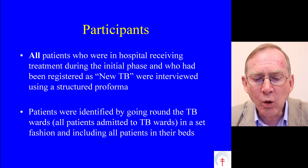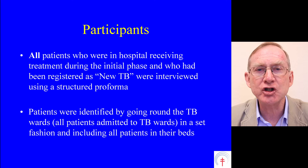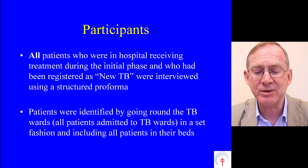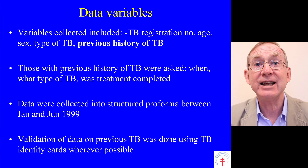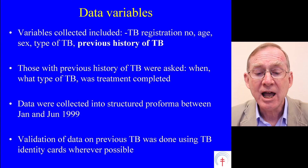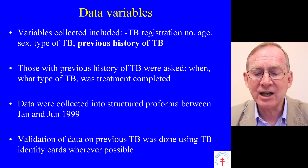Participants: 'All patients who were in hospital receiving treatment during the initial phase and who had been registered as new TB were interviewed using a structured proforma. Patients were identified by going round the TB wards, including all patients in their beds.' Data variables: 'Variables collected included TB registration number, age, sex, type of TB, and a previous history of tuberculosis. In those who said they had a previous history of TB, they were asked when they had it, what type of TB it was, and whether treatment was completed. Data were collected into a structured proforma between January and June 1999.'